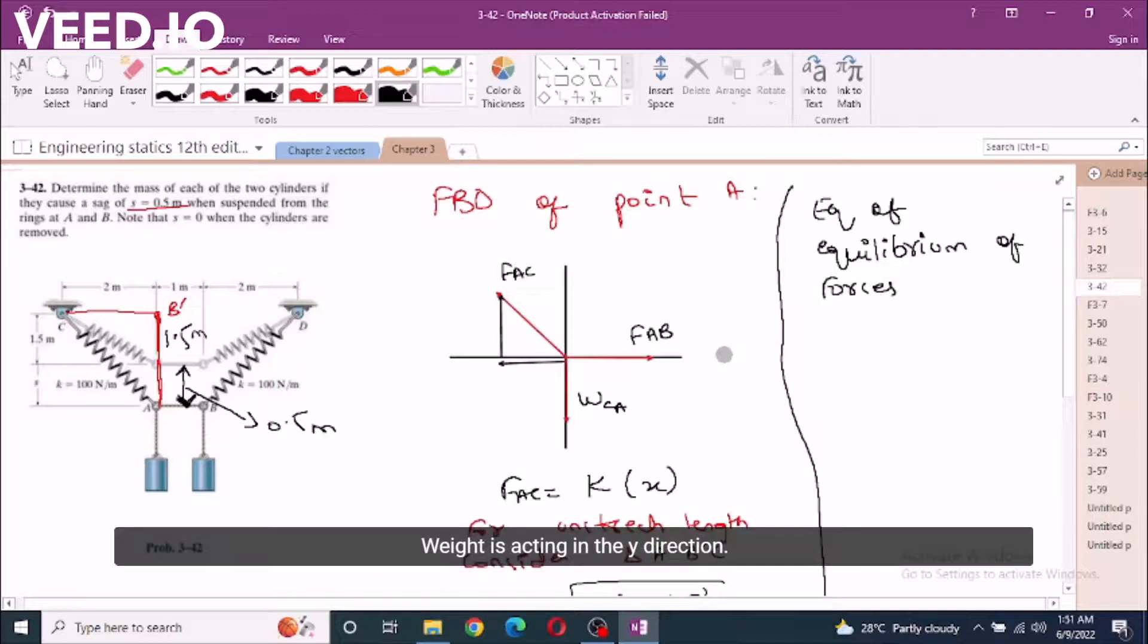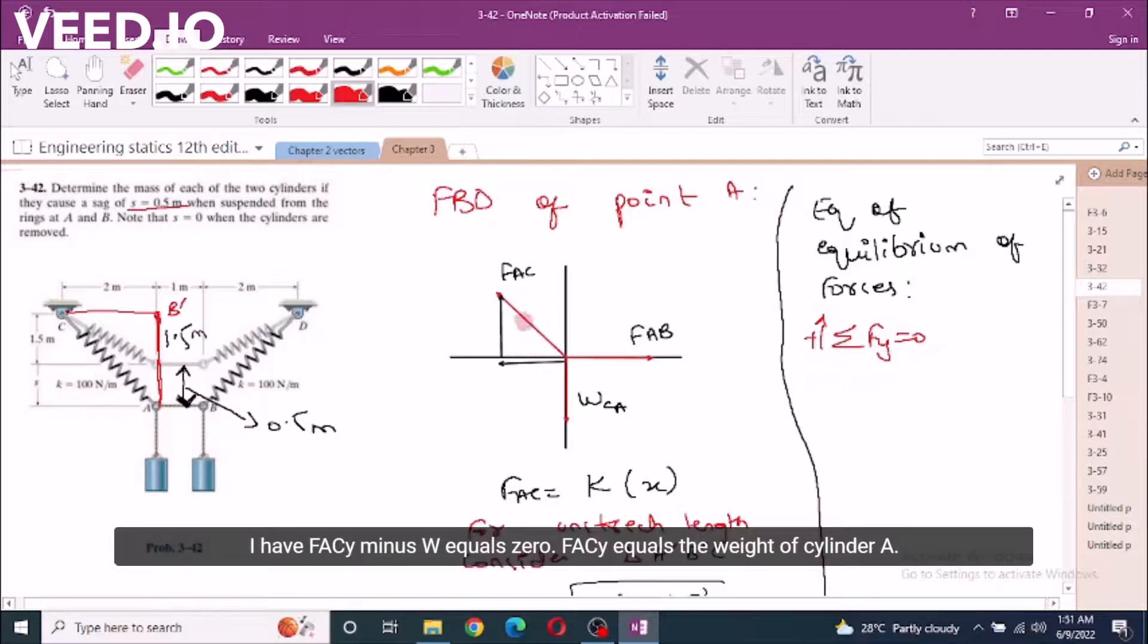Weight is acting in the y-direction, so we are starting with sum of forces in the y-direction. We are taking up-direction positive. I have FAC_y minus W_A equal 0. Now FAC_y is equal to - let's call this angle theta - FAC sin theta equals weight of cylinder A.